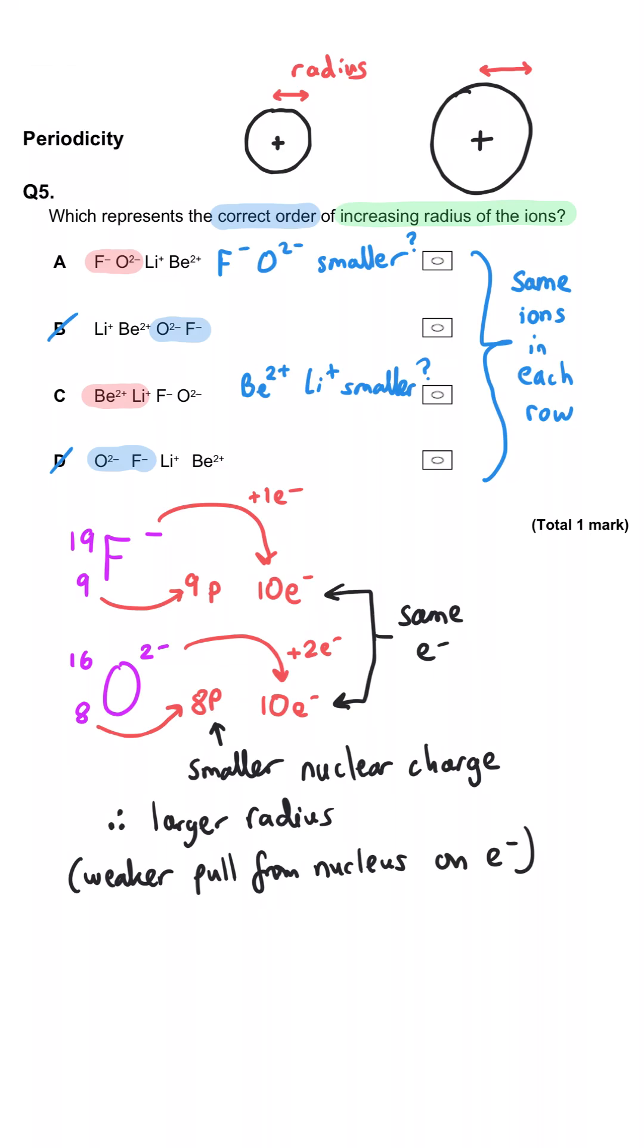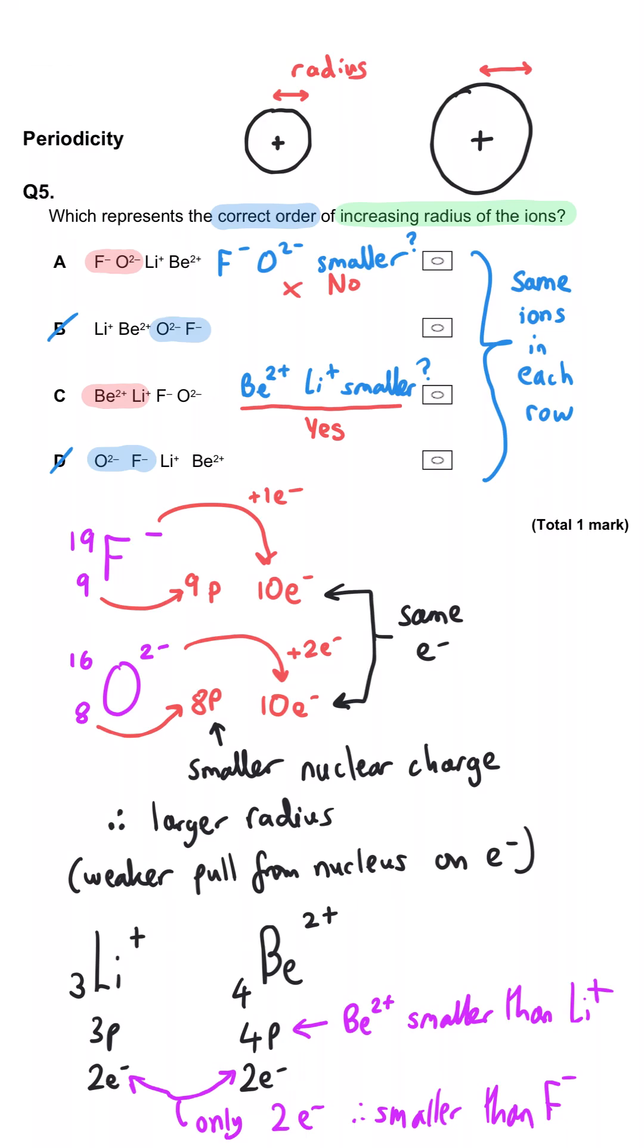Now, since the lithium and beryllium ions only have two electrons each, they will be much smaller than the oxide and fluoride ions. So that means A is wrong and C must be correct.